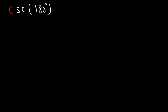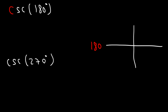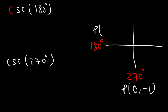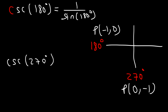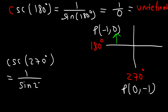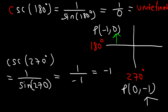Evaluate cosecant of 180 and cosecant of 270. At 180 the point is (−1, 0), and at 270 the point is (0, −1). Cosecant is 1 divided by sine. Sine of 180 is the y value, which is 0, so cosecant of 180 is 1 divided by 0 — undefined. For cosecant of 270: sine of 270 is the y value, which is −1. So 1 divided by −1 equals −1. Therefore cosecant of 270 is negative 1.